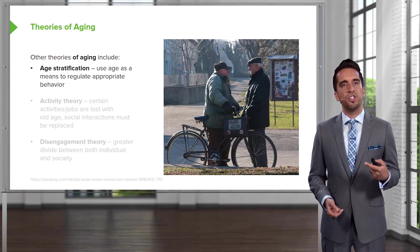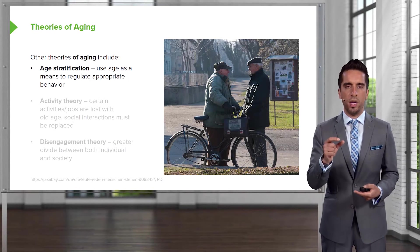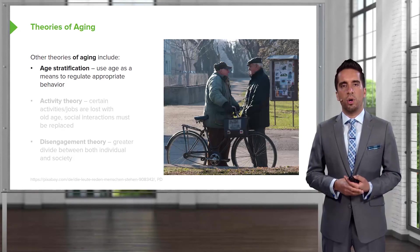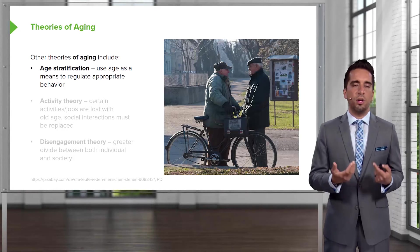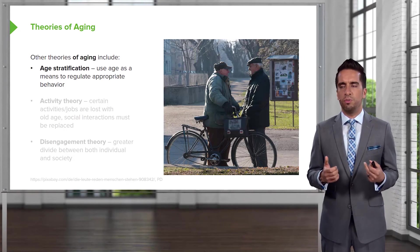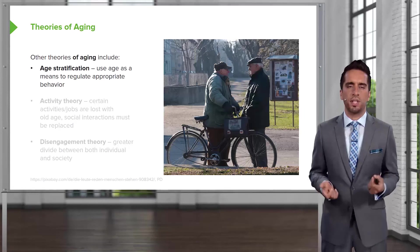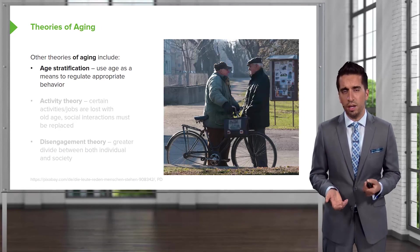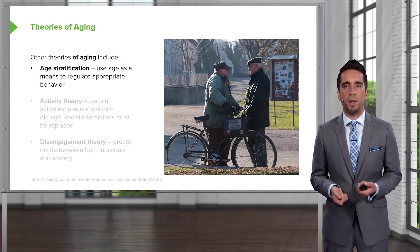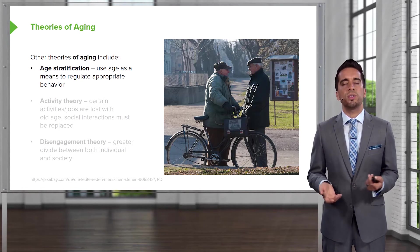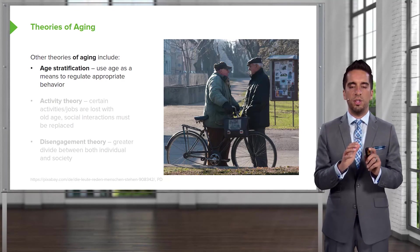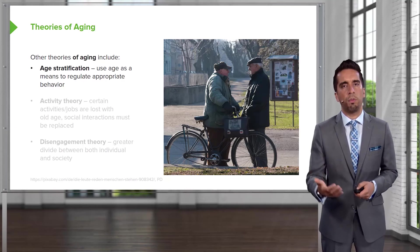Age stratification is when we use age as a means to regulate appropriate behavior. For example, would you expect to see an old person surfing shirtless at the beach, or sitting in a walker playing bingo? Who's to say they can't do either or both? We've stratified and set up norms for what we think is appropriate behavior for the elderly.